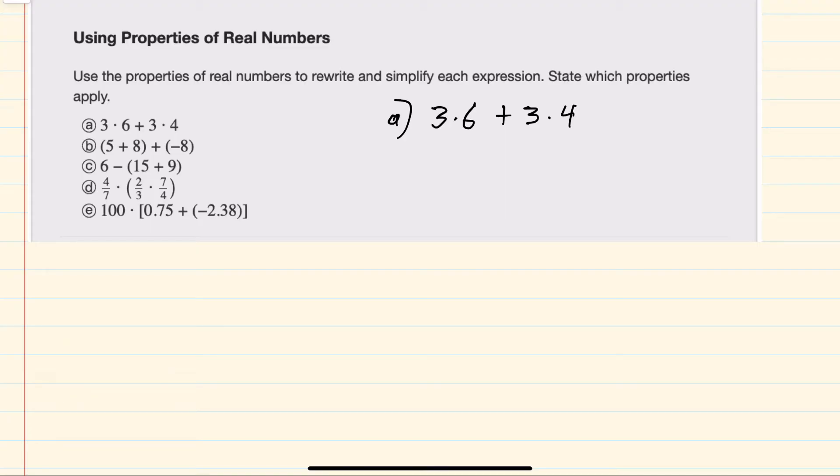where we have 3 times 6 plus 3 times 4, we can recognize this as distribution, where the 3 has been multiplied by both the 6 and the 4. So this could be rewritten as a 3 outside,